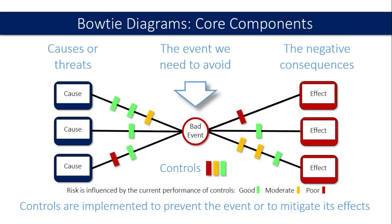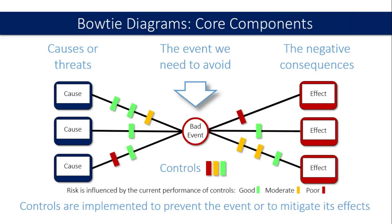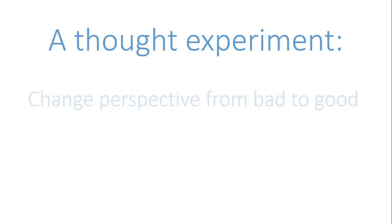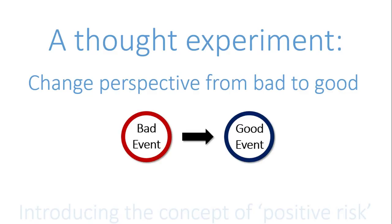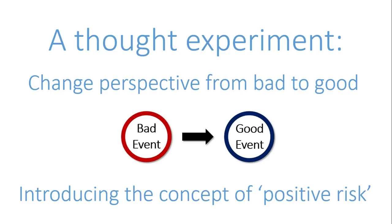It didn't take me long to realise that maybe this could be used in a different way, because I was interested to know how we could apply this in the world of business consulting, management consulting — more positive approaches to uncertainty, business success, that sort of thing. Whereas this model is really focused upon the downside of risk, the things that can go wrong. So this was a thought experiment, in effect, which was changing the perspective of the diagram from bad to good. I just thought, well, if I put a good event in the centre of the diagram, what happens to the diagram? And this sort of ended up developing this concept that I call positive risk.